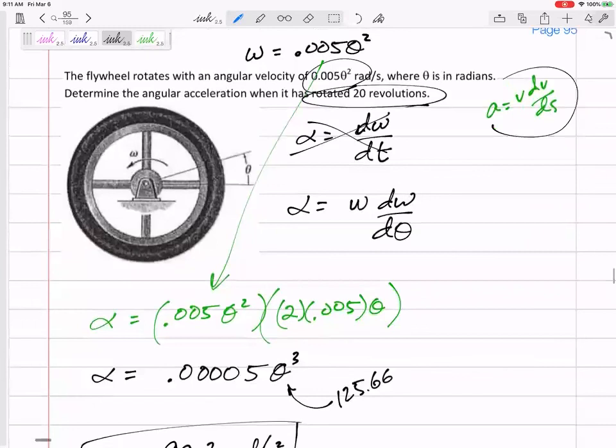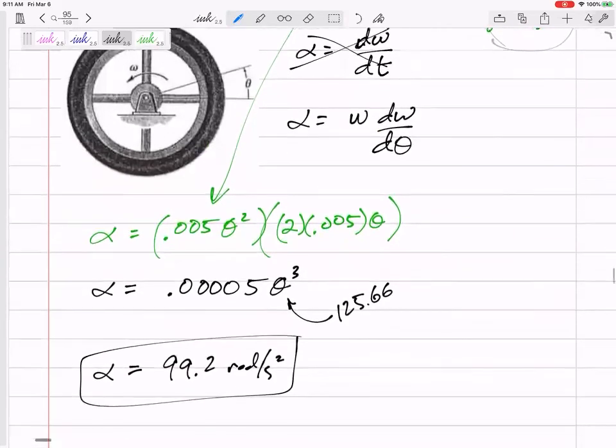But you see how that was so similar to v dv/ds? Now it's omega dω/dθ.